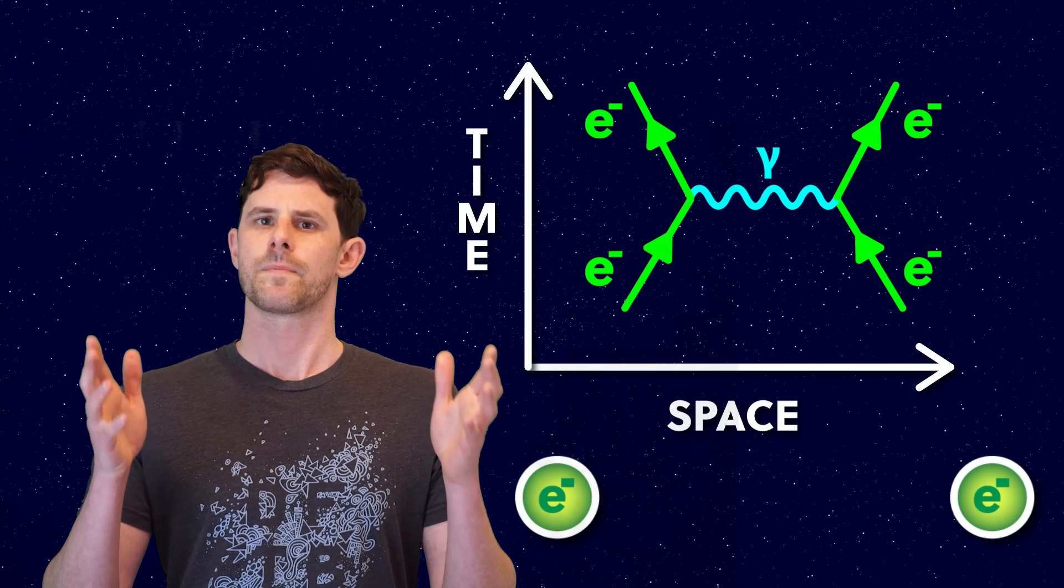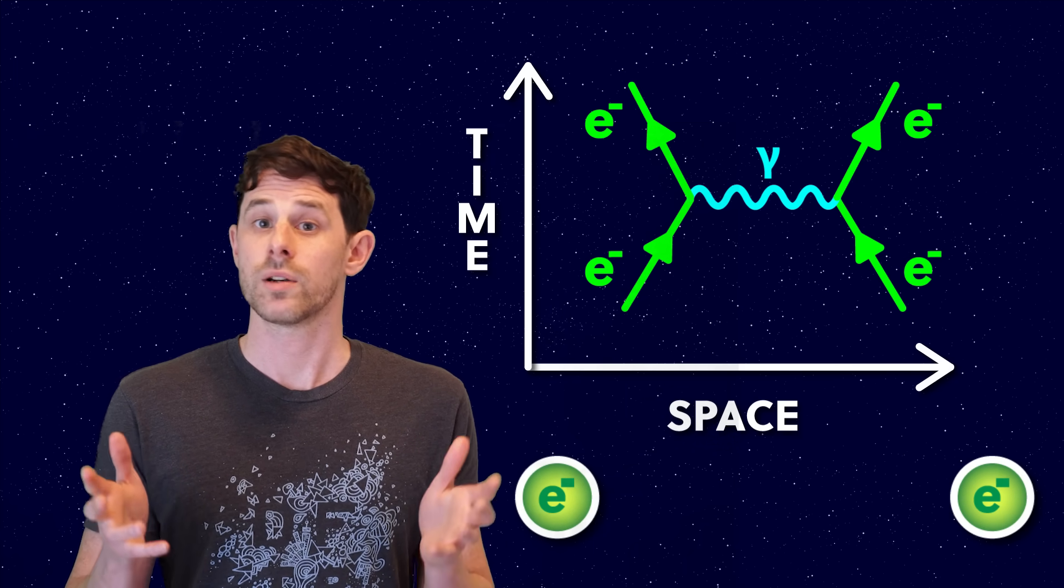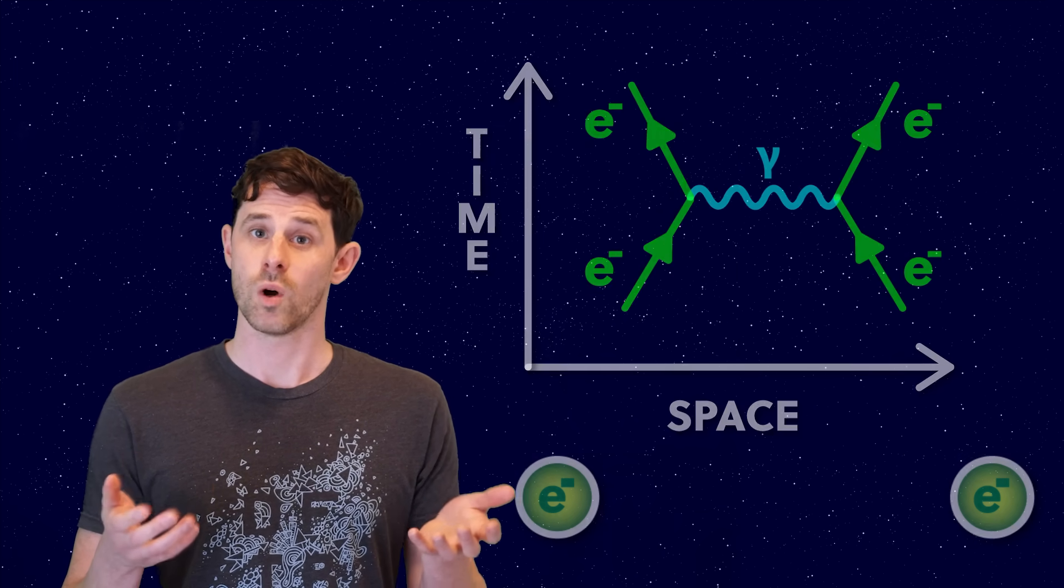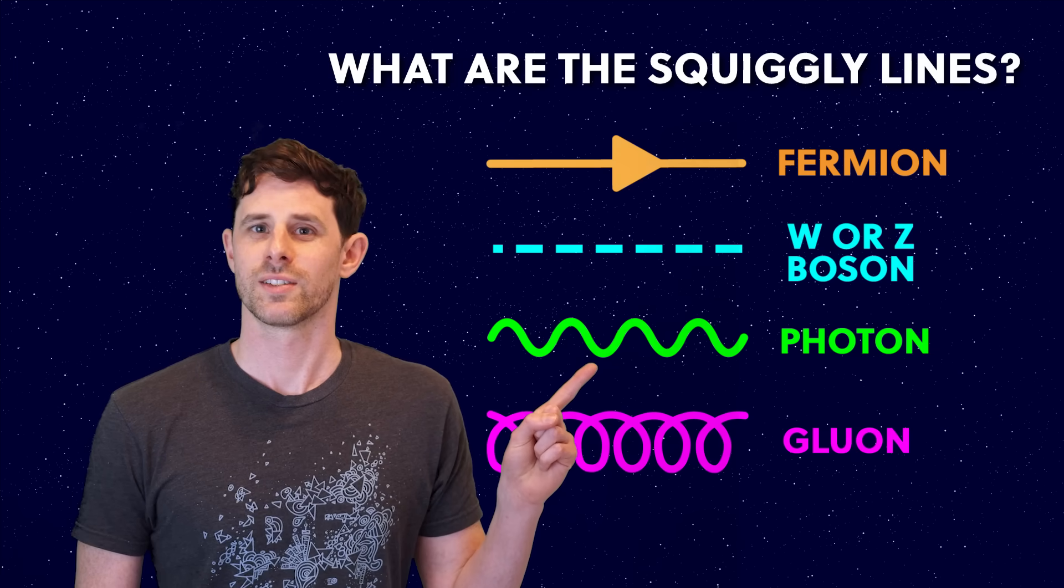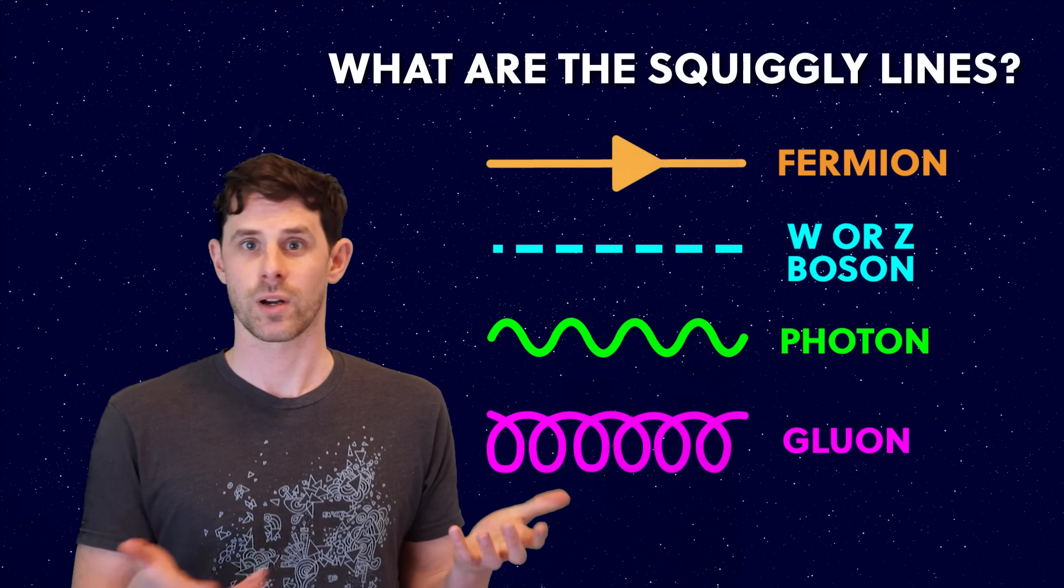OK, that's the basics. Now let's get on to part one of the three things we need to know. What are the squiggly lines? These are the four kinds of lines, each corresponding to a different kind of particle.